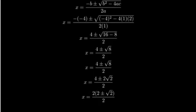Now, we can factor out a 2 from the numerator. Finally, we can cancel out the 2 in the numerator and denominator, giving us our final answer: x equals 2 plus or minus the square root of 2.